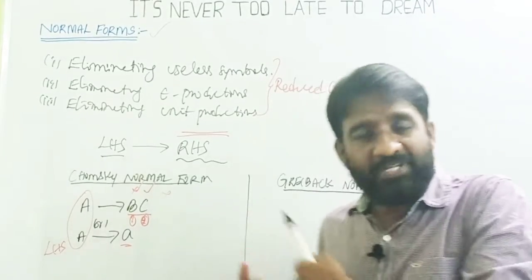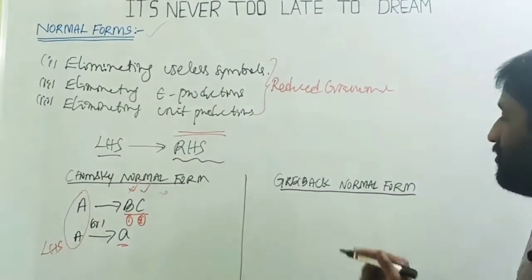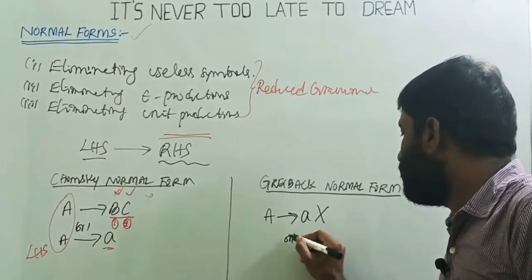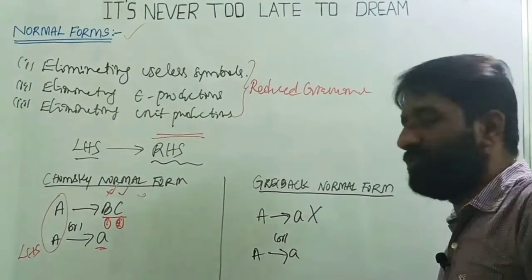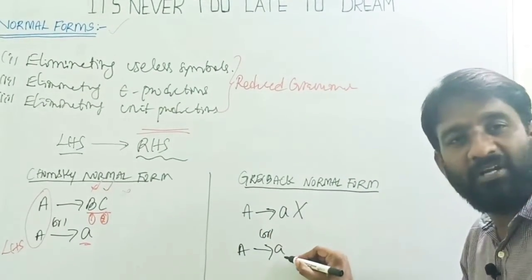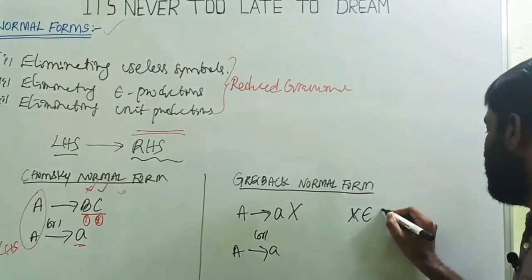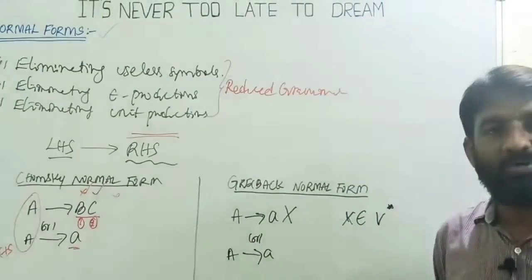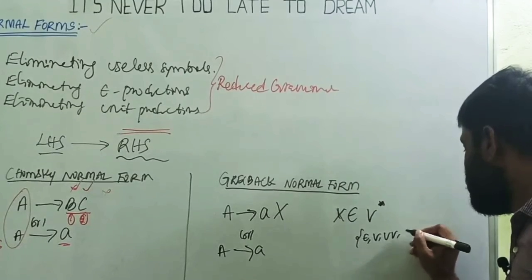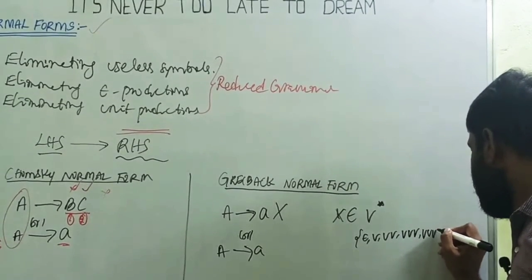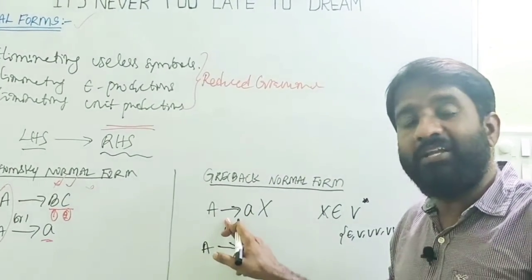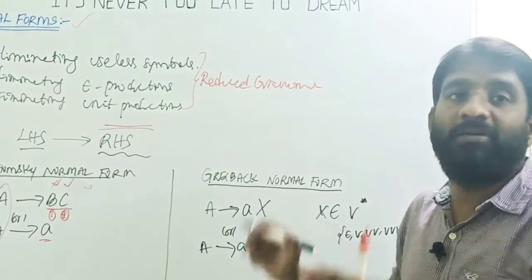Now for a brief introduction to the Greibach Normal Form: the format is A → aV*, where V* is the Kleene closure over variables. V* can be epsilon, a single variable, two variables, three variables, four variables, five variables, and so on.